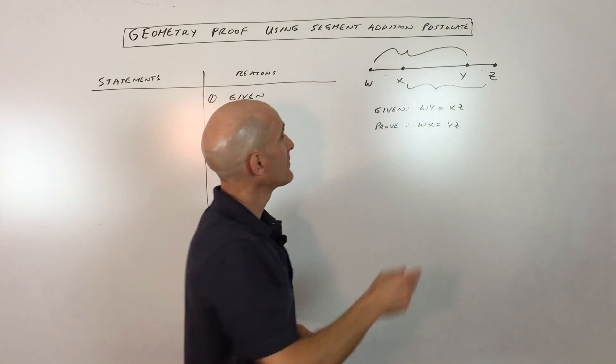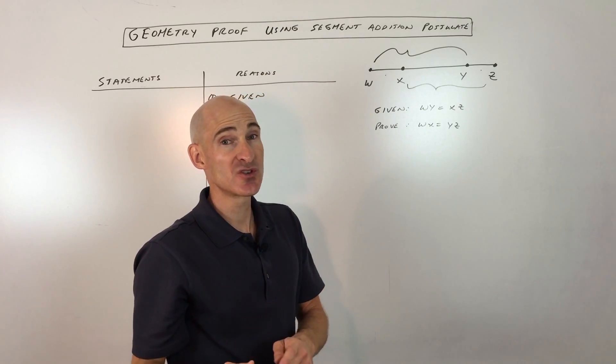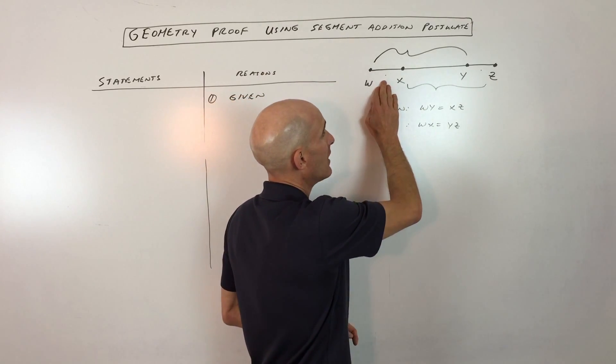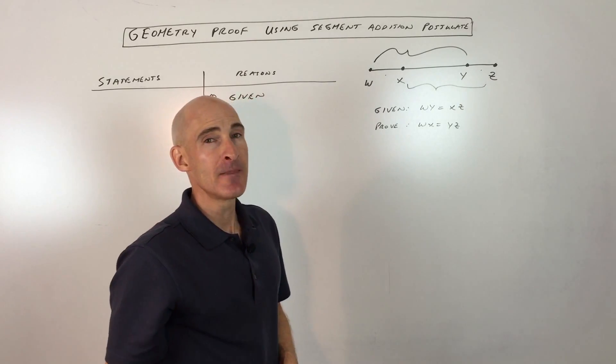If those two things are equal, and then we subtract off something that's in common between those two segments, we should be left with what's left over, which is WX is then equal to YZ. Does that make sense?